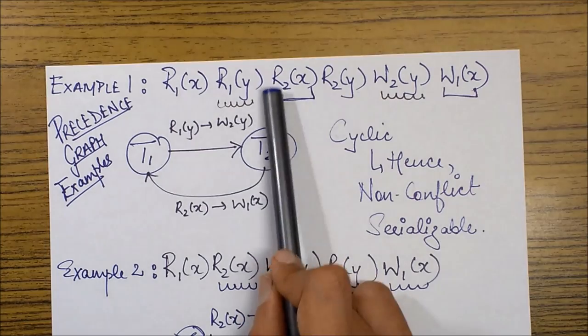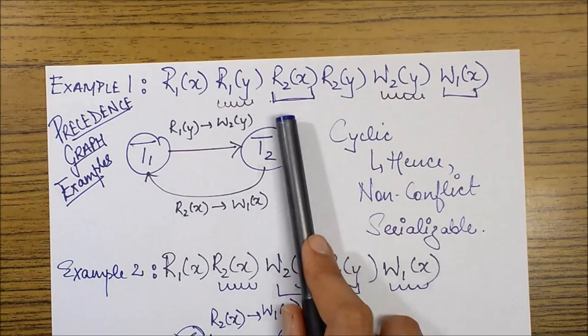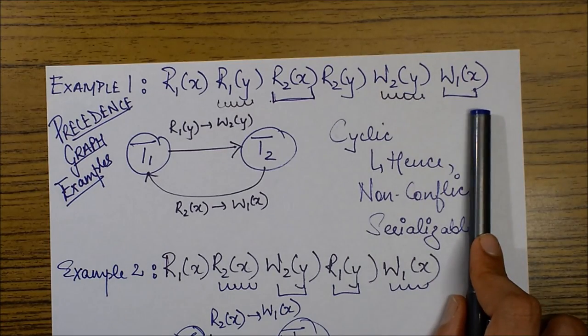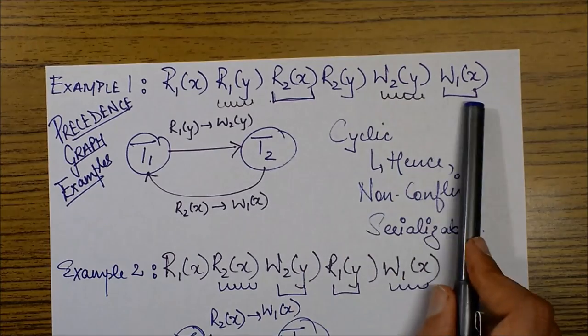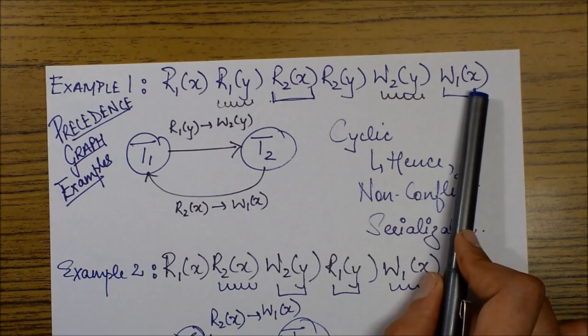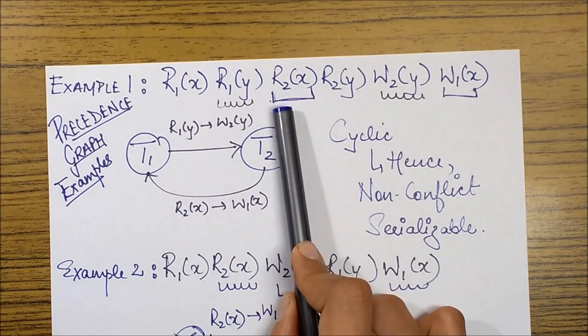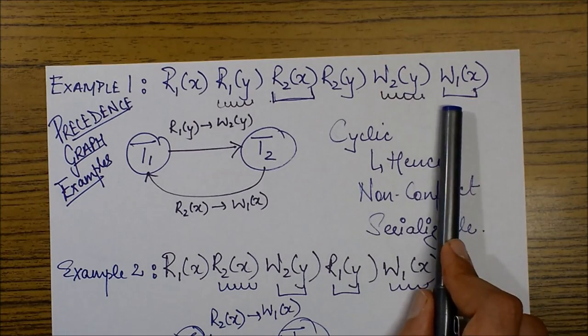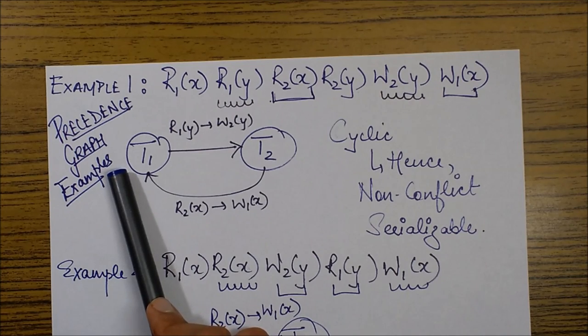Now we see there is another conflict pair over here which is R2X and W1X. Again the conflict pair operation is on the same data item X and it is from T2 transaction to T1 transaction. So edge now in this case will move from this to this.